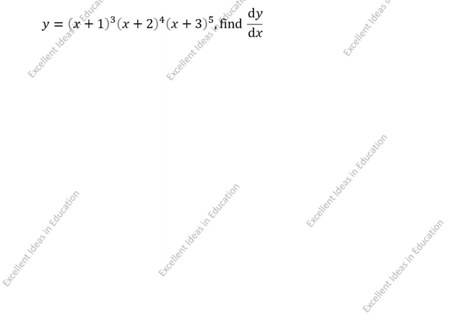Hi friends, welcome to my channel Excellent Ideas in Education. Today we are going to solve this differentiation problem. This is a JEE/NEET question. We will solve this question using a shortcut trick. What is given: y is equal to (x+1)³ · (x+2)⁴ · (x+3)⁵. Find dy/dx. We will differentiate with respect to x.